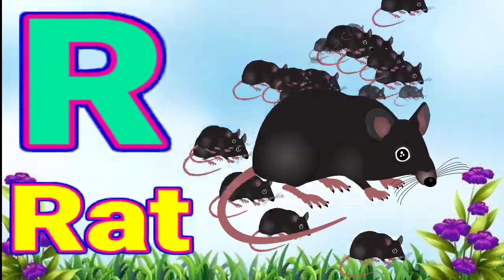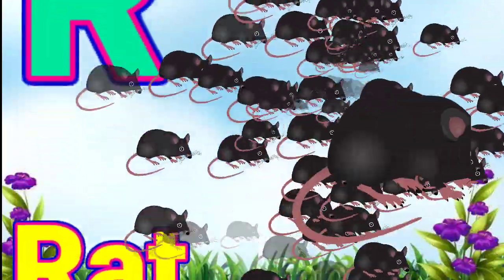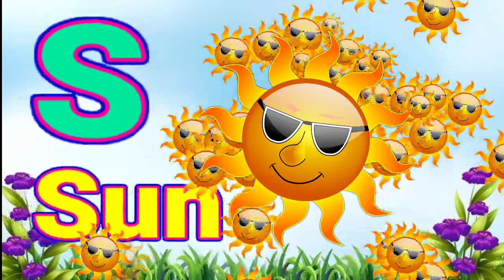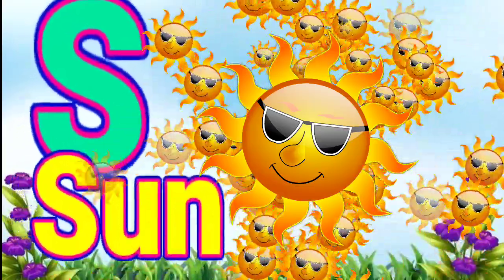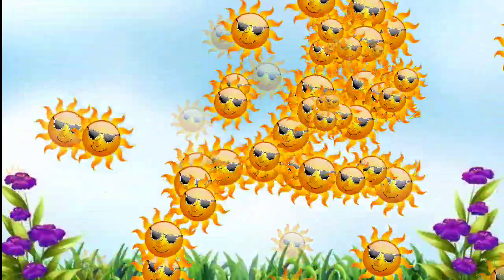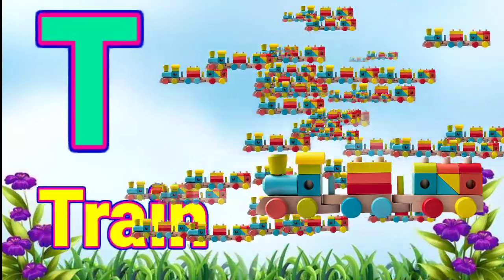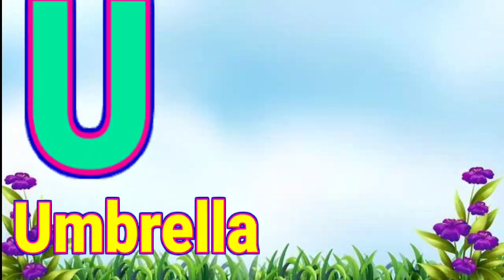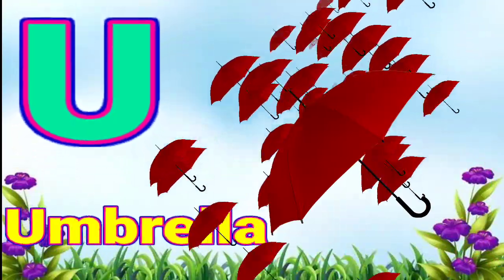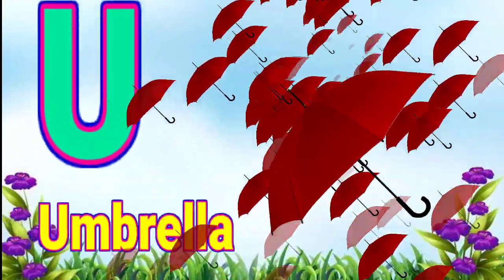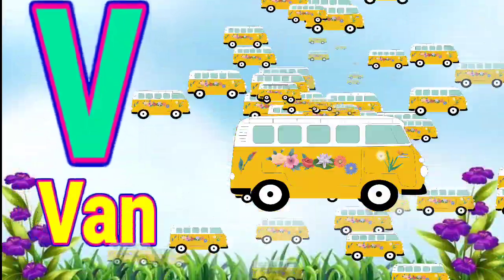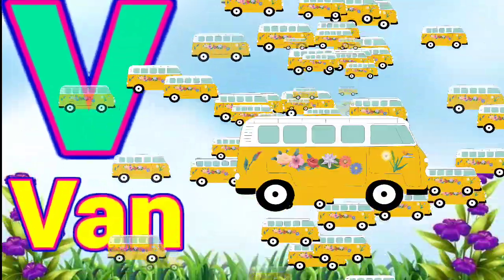R for Red. S for Sun. T for Train. U for Umbrella. V for Van.